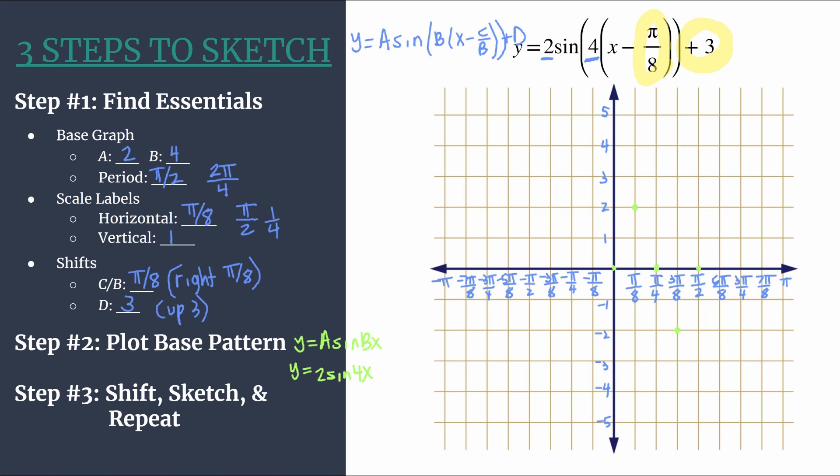So if we were graphing just y equals 2 sine 4x, we could sketch it in, repeat, we'd be done. But we know that this has shifts. We already worked on them. Our shifts are right here in step 1. So step 3 is to shift, sketch, and repeat. So we'll take our lightly plotted points, or in this case, my green points, and we're going to apply these two shifts. So we're going to move each of these green points to the right pi over 8. So that's one horizontal grid unit in this case. And then we'll move them up 3 units, or 3 vertical grid marks.